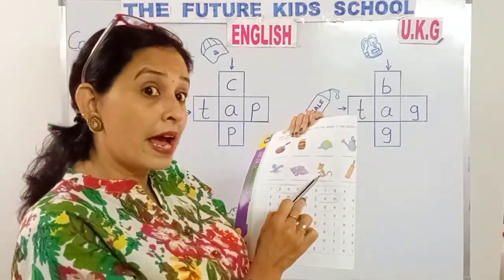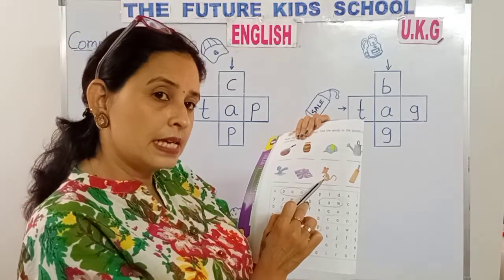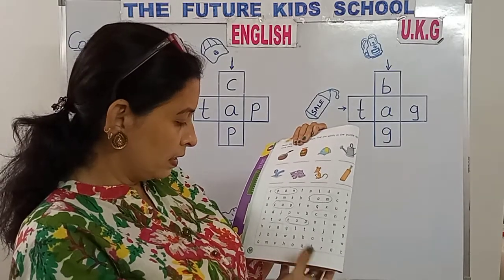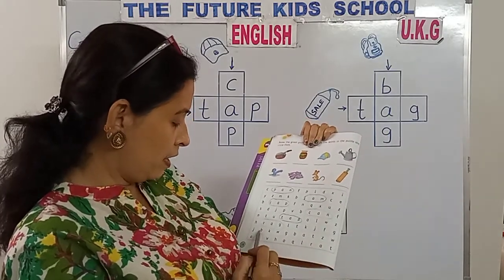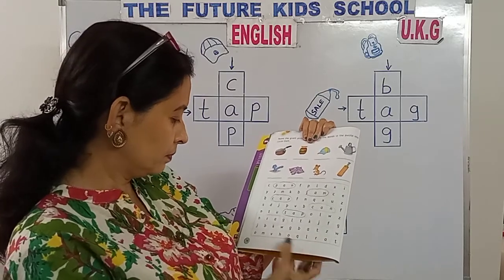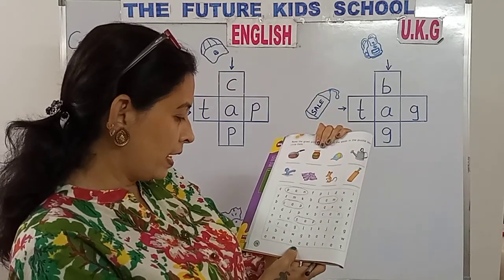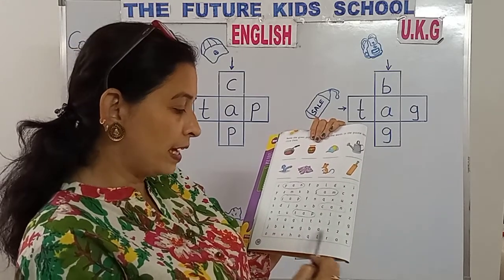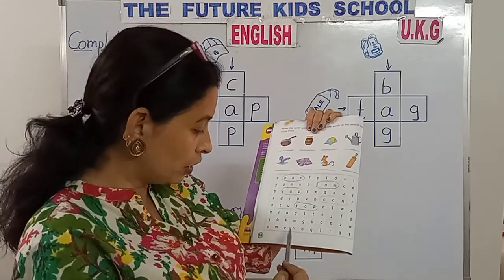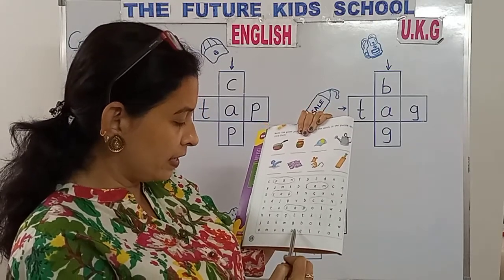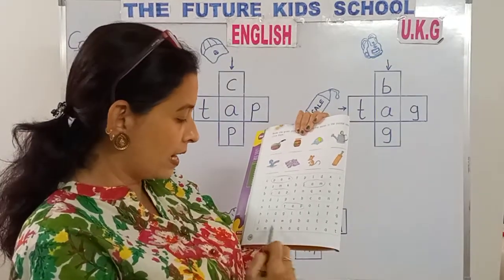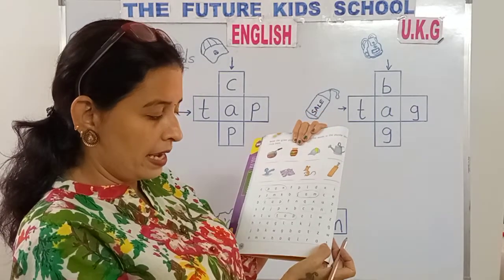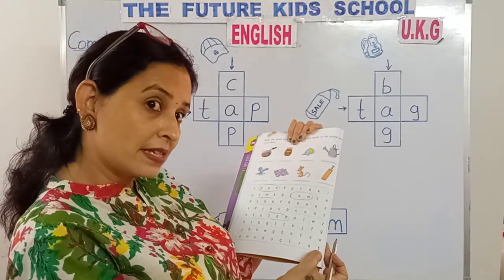This is a rat. R-A-T. Rat. Now look here — can we find rat anywhere over here, children? R-A-T. Rat. No, we cannot find it in this line. Now look below in this line if we can find R-A-T. Rat. Yes, here it is. R-A-T. Rat. Circle it.